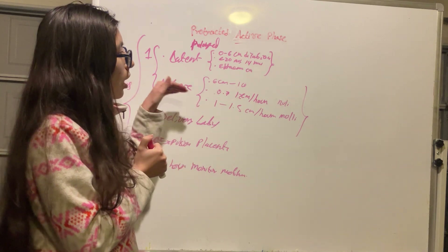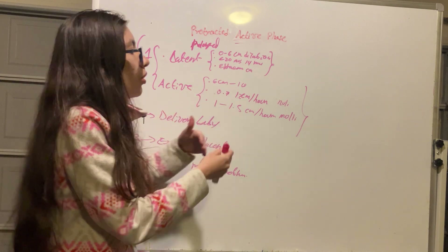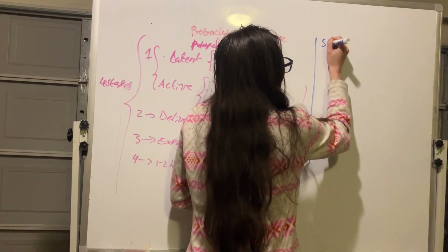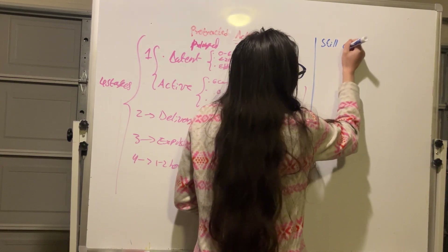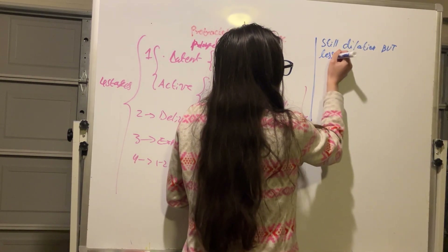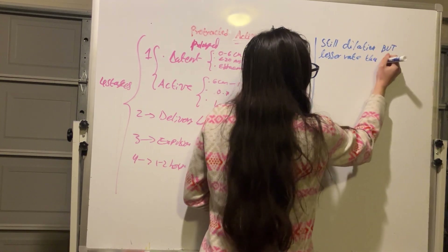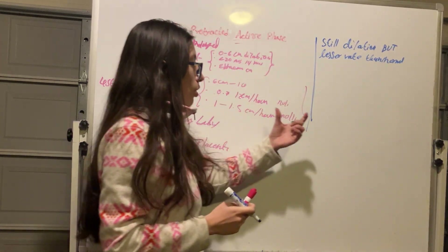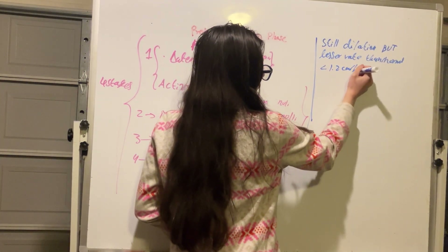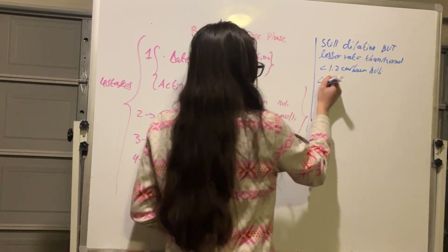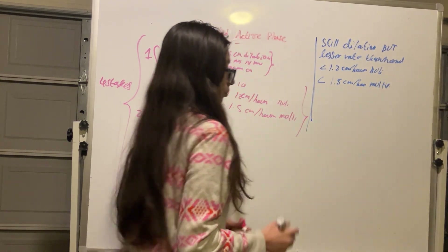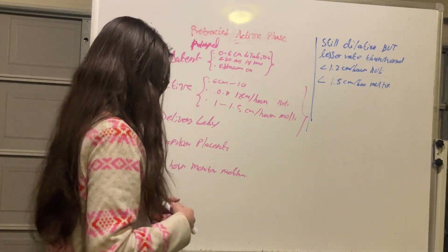Prolonged or protracted active phase means we are still having dilation, but at a lesser rate than normal. Specifically, dilation will be less than 0.7 to 1.2 centimeters per hour in a nulliparous woman, or less than 1.5 centimeters per hour in a multiparous woman.